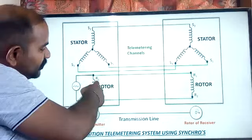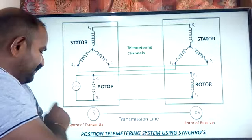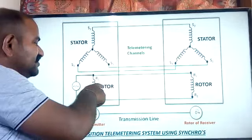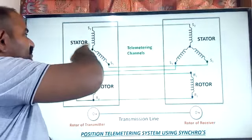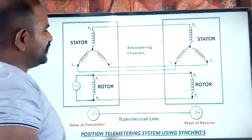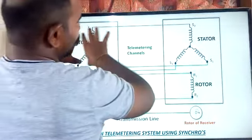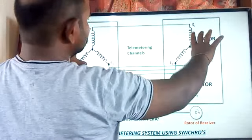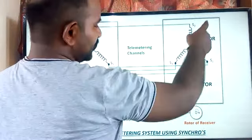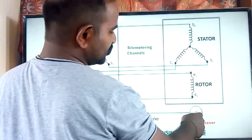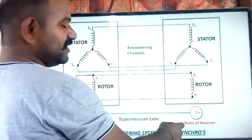Whenever there is a change in the rotor position at the transmitting end, this change is converted into electrical field format and induced in the stator as EMF. When the EMF of the transmitting stator differs from the receiving stator, there is a potential difference, and current passes from the transmitting end to the receiving end — until the receiver rotor re-adjusts its position to match the transmitting rotor's angular position.